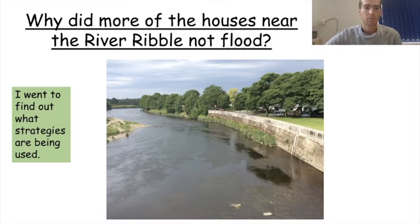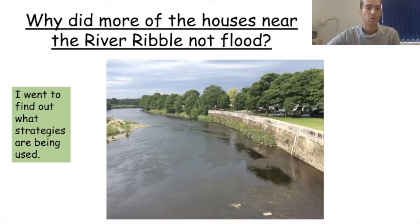So what we're going to focus on is: why did more of the houses near the River Ribble not flood? I went to find out what strategies are being used.